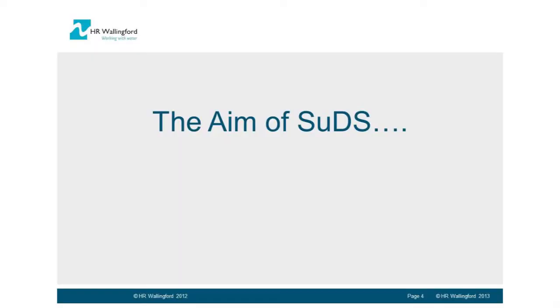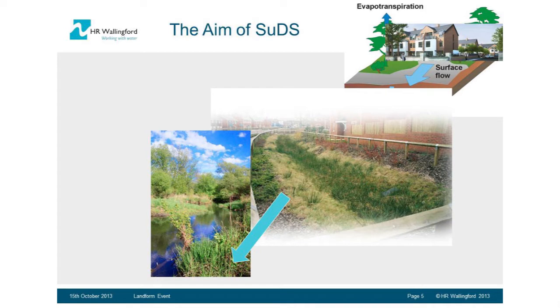When we put development in, you dramatically reduce your interflow and base flow processes, and considerably increase your surface flow. You put it into a big pipe, and the watercourse at the end deteriorates and becomes impacted by the development. With SUDS, we're trying to integrate sustainable drainage systems to deliver amenity, biodiversity, and urban surface water management while still protecting natural watercourses downstream.